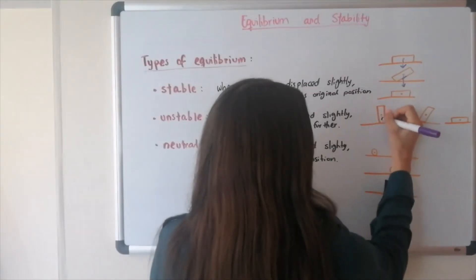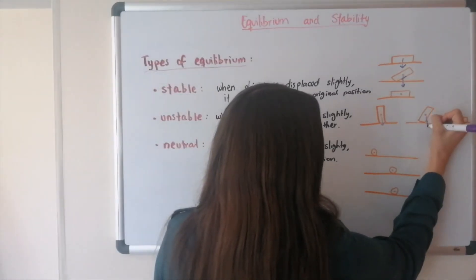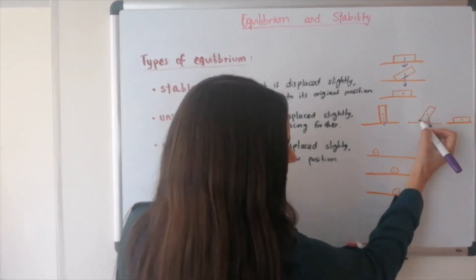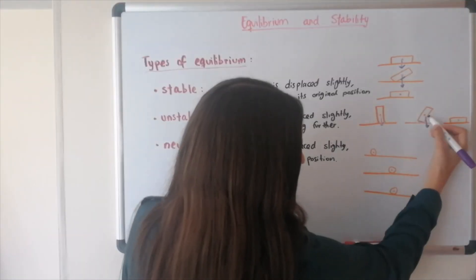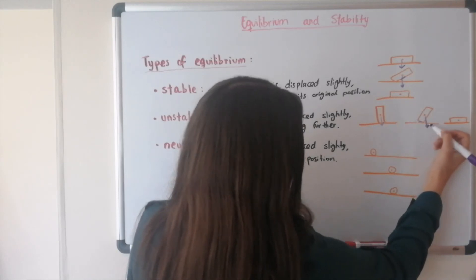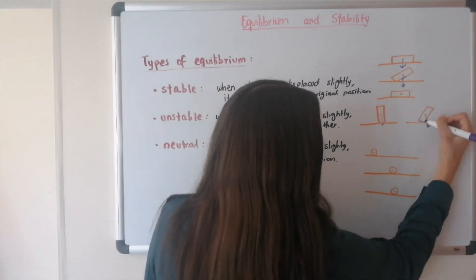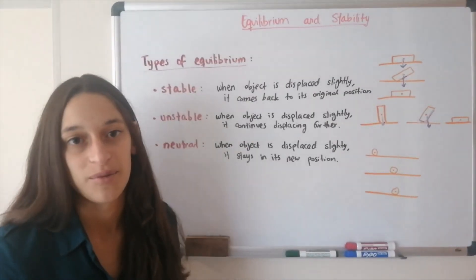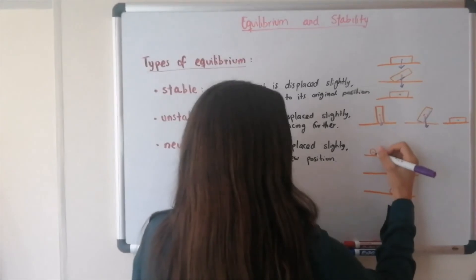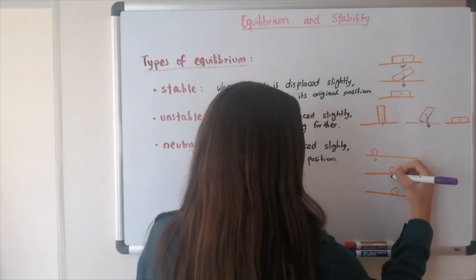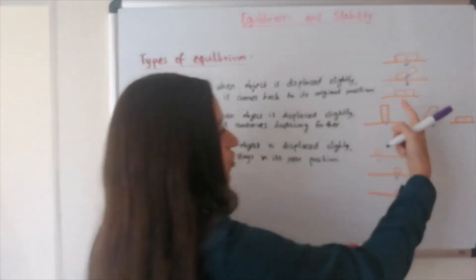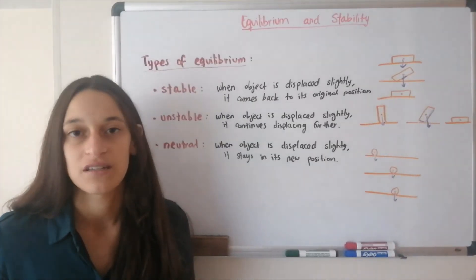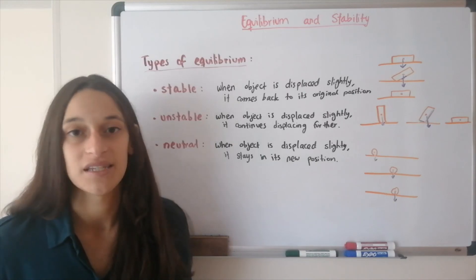For the book standing on its short side, the arrow goes down, but when I push it, the arrow is no longer passing through the base — it's outside the base — so it falls to a new position. That's why it's an unstable equilibrium. For the rolling ball, it's always passing through the base, so it stays wherever you place it — neutral equilibrium. So when you have an object, just draw that arrow and see if it passes through the base to determine stable or unstable equilibrium.